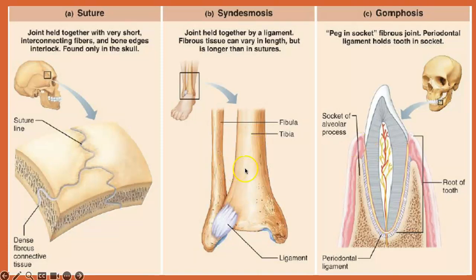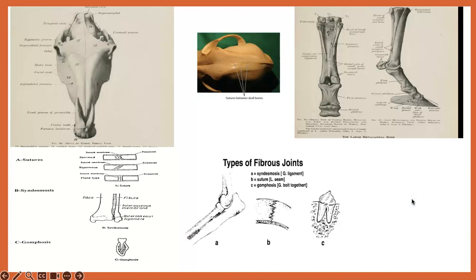Looking at the pictures, you can see the sutures between the bones of the skull with different types depending on the shape of the bone. You have the syndesmosis visible between the metacarpal bones. You can see the tooth implanted in the alveolus. Also visible again are sutures in the skull of the equine and the dog, as well as the metacarpal bone of the equine.